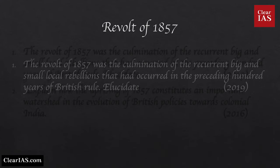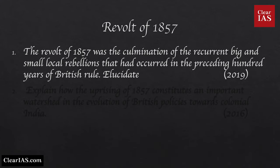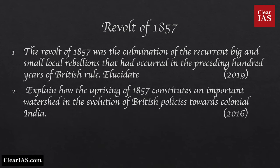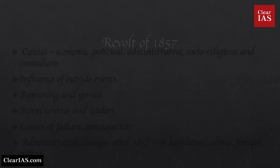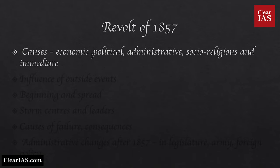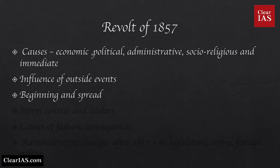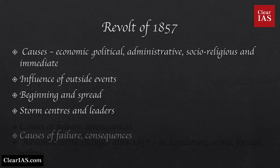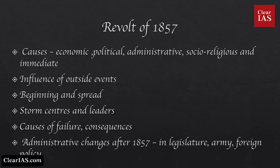The Revolt of 1857 or Sepoy Mutiny is another focus area. Sample Mains questions: The revolt of 1857 was a culmination of recurrent local rebellions over the preceding 100 years of British rule — elucidate. Explain how the uprising of 1857 constitutes an important watershed in the evolution of British policies towards colonial India. Important things to learn include various causes — economic, political, administrative, social-religious and immediate — influence of outside events, beginning and spread of the revolt, storm centres and leaders, causes of failure, consequences, and administrative changes after 1857 in legislature, army and foreign policy.